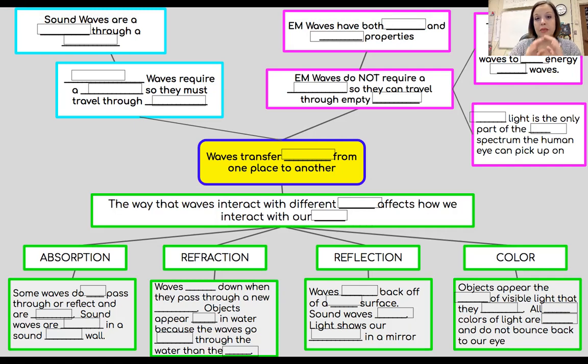The other thing that we need to know about the EM spectrum is that visible light is the only portion of the EM spectrum that the human eye can actually pick up on. So one more time, visible light, what we see with our vision, right? Visible light is the only part of the EM spectrum that the human eye can pick up on.